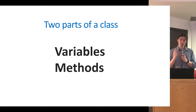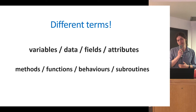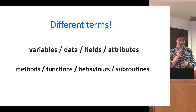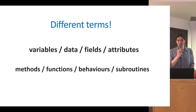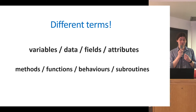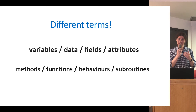Let's think about the two parts of a class. The two key parts are variables and methods. Unfortunately, these go by lots of different terms. Depending on which book you read, you may come across alternative terms such as data, fields, or attributes — those are all alternative names for variables. And likewise for methods, we have alternative terms such as functions, behaviors, and subroutines. Just remember that they all refer to the two same parts of a class. In this lecture we're going to unpack both, starting with variables.